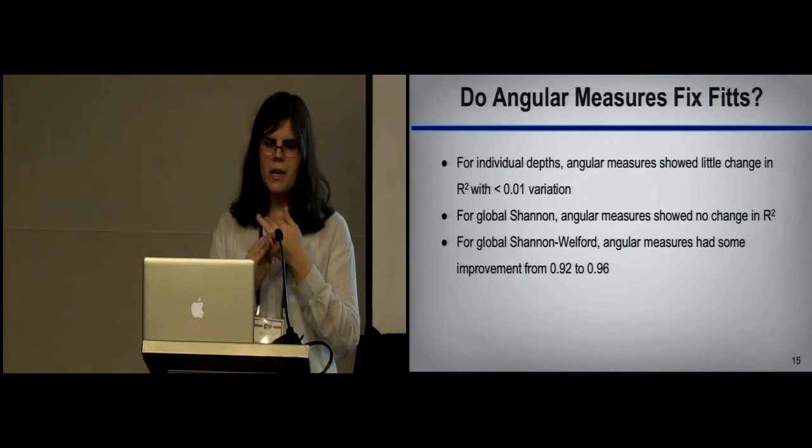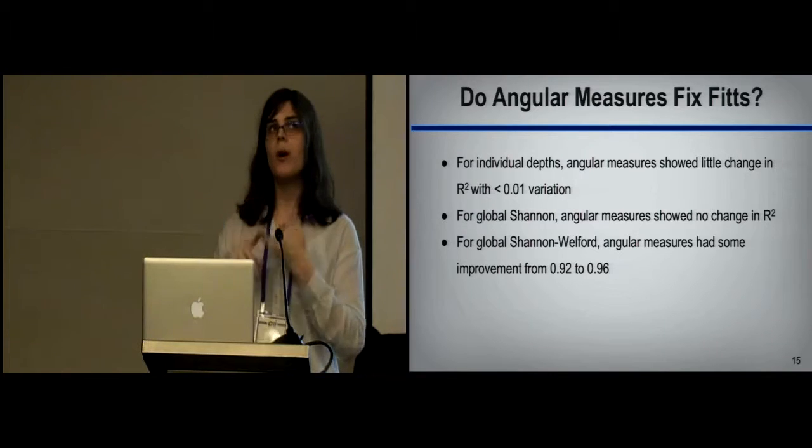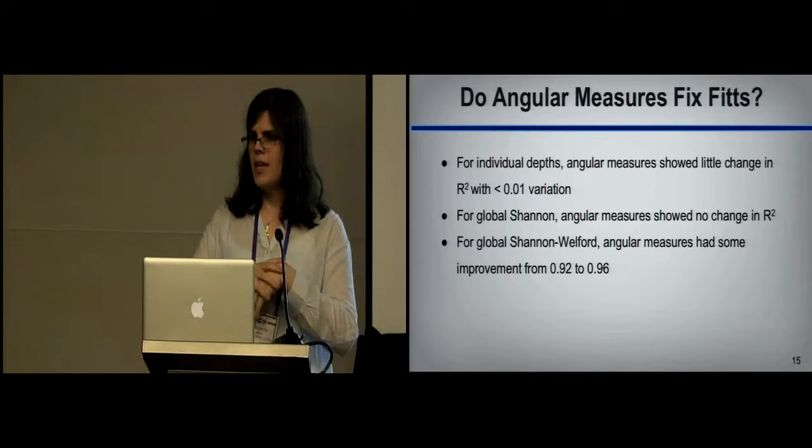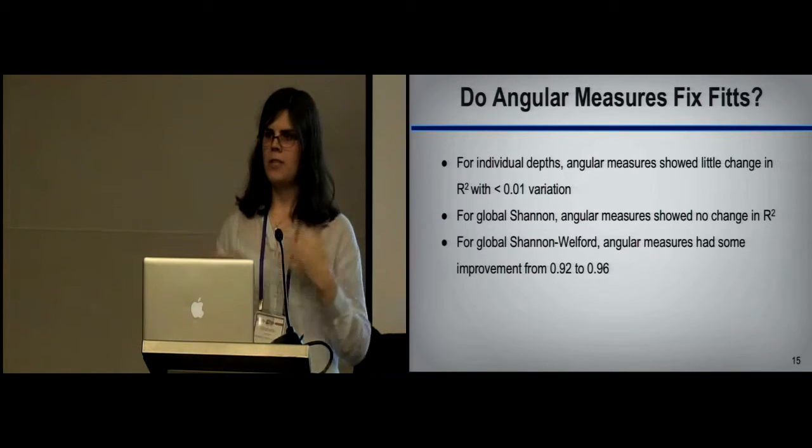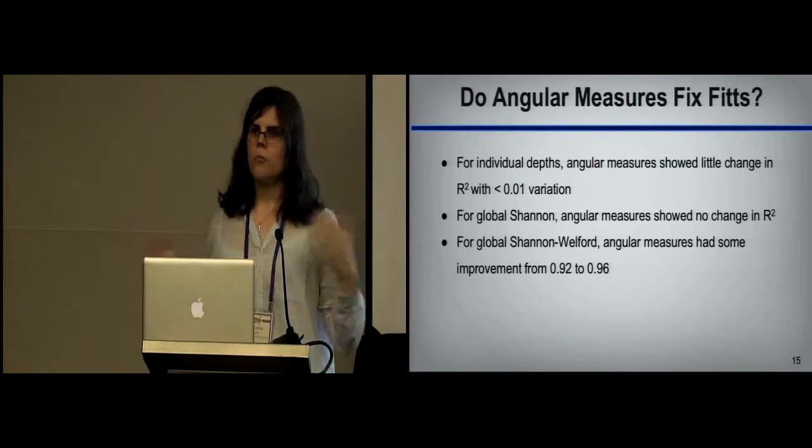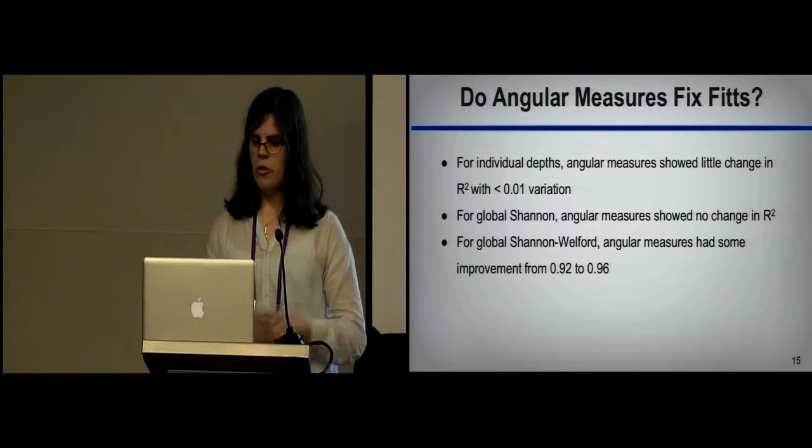For global Shannon Welford, for some reason we saw an improvement from .92 to .96. Even still, that's nothing like what Hopper was seeing. Hopper was seeing like changes from .7 to .95, which we did not see at all. So we just really didn't find that much support for that idea.